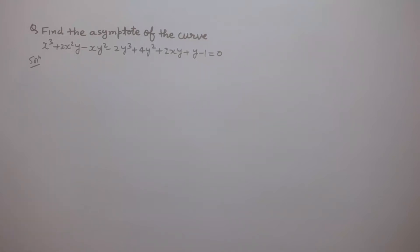Students, in this question we have to find the asymptotes of the given algebraic curve: x³ + 2x²y − xy² − 2y³ + 4y² + 2xy + y − 1 = 0. The given curve is an algebraic curve and we need to find its asymptotes.